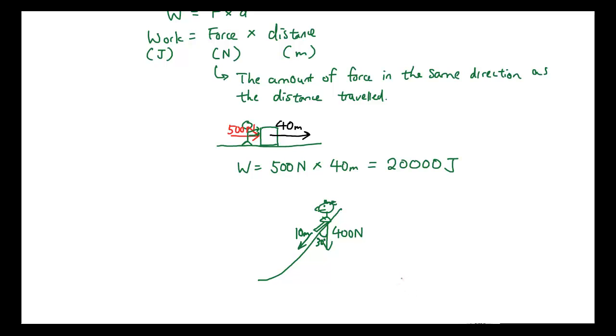But the distance that he is moving is not downwards. Because of the slide, he is moving in this direction downwards. So the distance, let's say he slides down 10 meters. And the angle between the slope and the vertical, this angle here, is 30 degrees. So when we're calculating work equals force times distance, it's not 400 times 10. Why is it not 400 times 10?